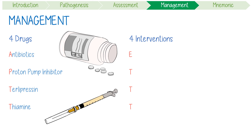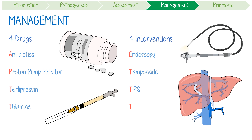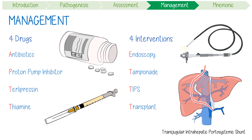The main interventions include endoscopy to find and stop the bleeding; balloon tamponade if this fails; an emergency TIPS procedure — Transjugular Intrahepatic Portosystemic Shunt — which is a temporary way for the portal vein to bypass the liver to reduce backed-up pressure; and finally, a liver transplant after the TIPS, at some point down the line.